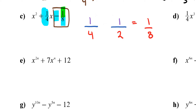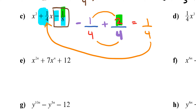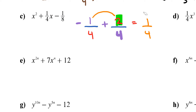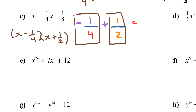The middle number is positive 1/4, so I want the minus sign on the smaller fraction and the bigger fraction positive. Since 1/4 is smaller, I put the minus sign on 1/4 and the positive sign on 1/2. Changing the denominator to 4: negative 1 plus 2 is 1/4, which matches the middle term. So my numbers are negative 1/4 and positive 1/2, giving (x − 1/4)(x + 1/2).